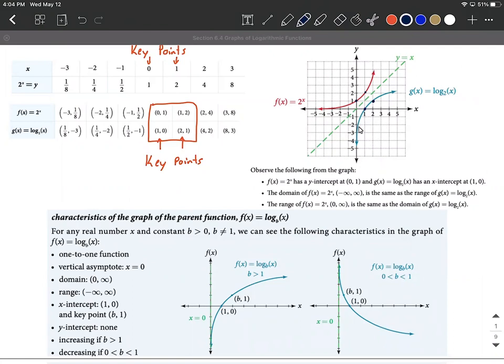The range however they go down forever and they also go up forever as well. So the range is going to be from negative infinity to positive infinity. This is outlined in the box at the bottom. Domain (0, ∞) excludes 0. The range negative infinity to positive infinity. And then these key points which I already pointed out above.